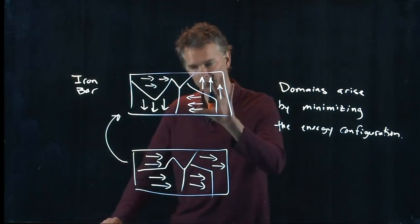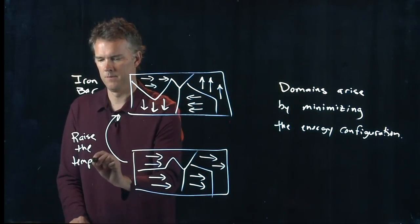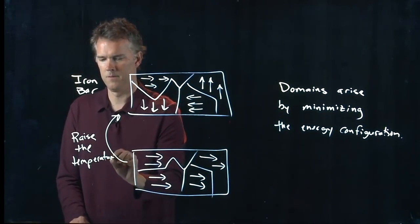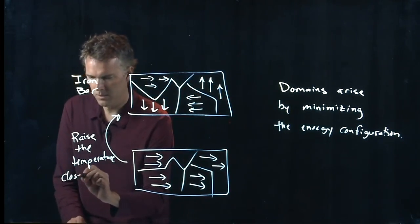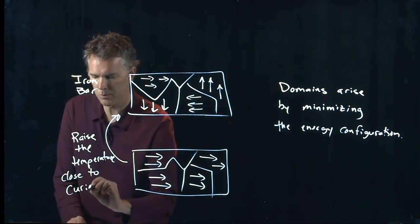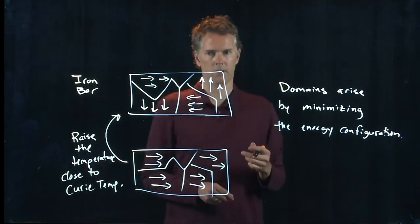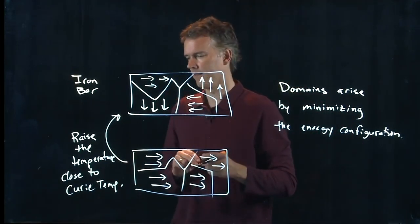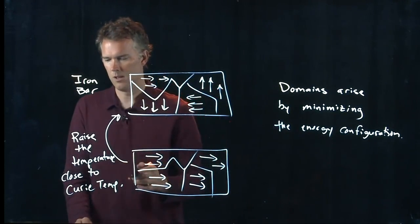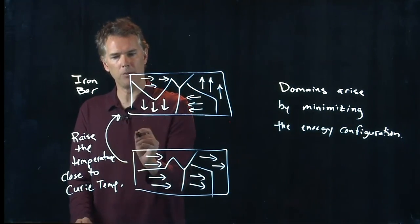Well, if you raise the temperature close to what's called the Curie temperature—and this is named after Marie Curie, double Nobel laureate in physics and chemistry—if you raise it close to that temperature then the domains get scrambled.